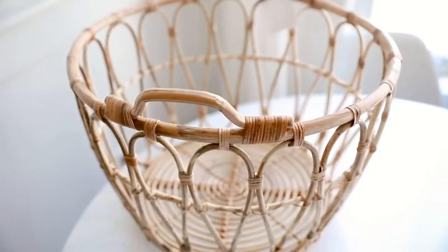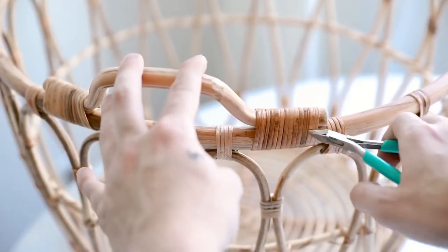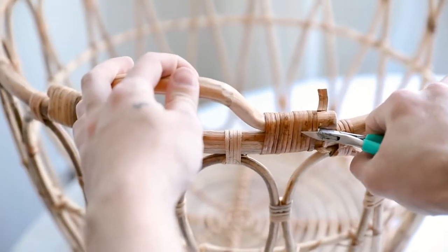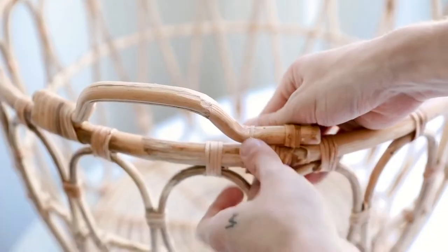For additional supplies you're going to need wire cutters and some hemp cording as well. So I'm starting off with my wire cutters and I'm basically going to be cutting the handles off this basket. You could leave them on if you wanted to, but I really wanted it to have the appearance that this was created as a pendant light shade and not a basket turned into a pendant light shade.